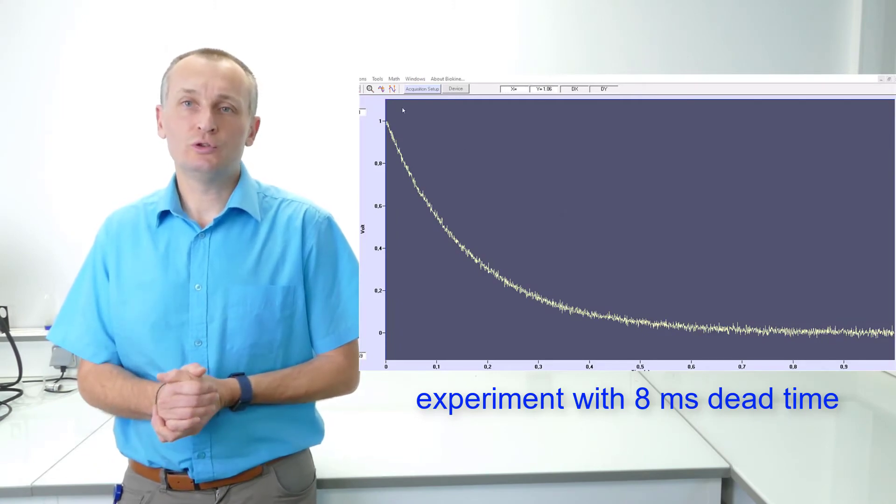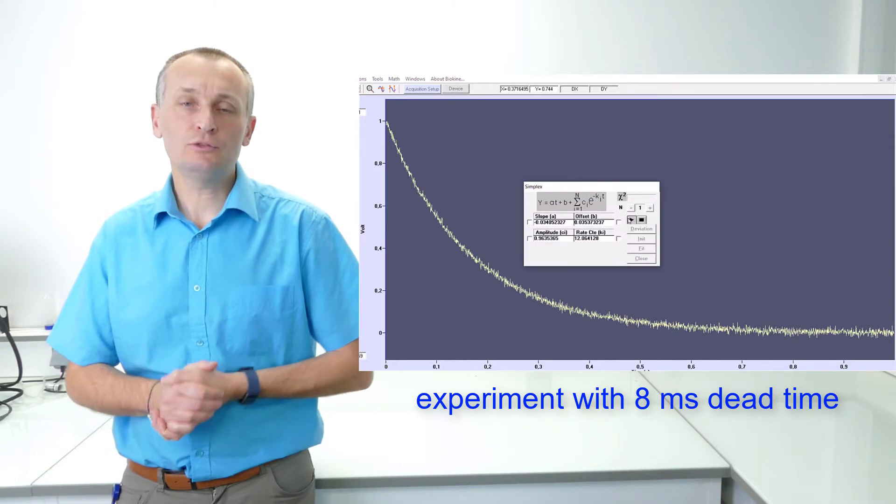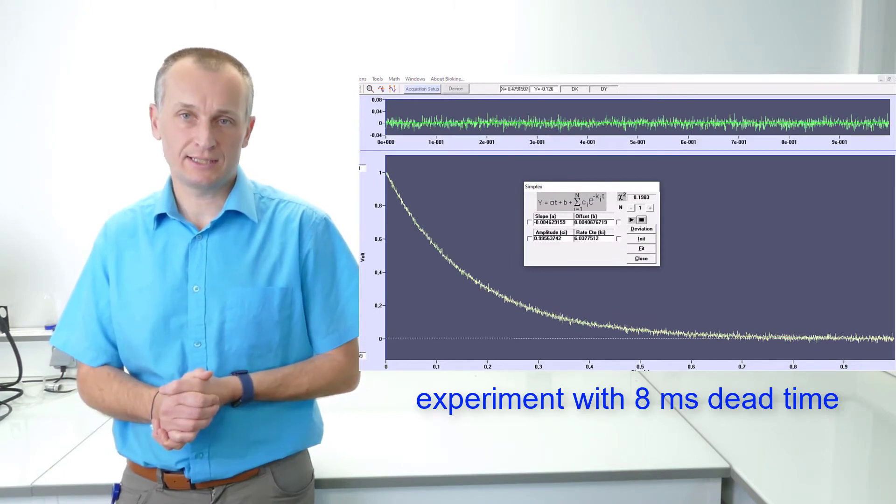This is an example of a trace you could obtain with an 8 ms dead time. The data looks good, and it could be fitted perfectly using a single exponential.